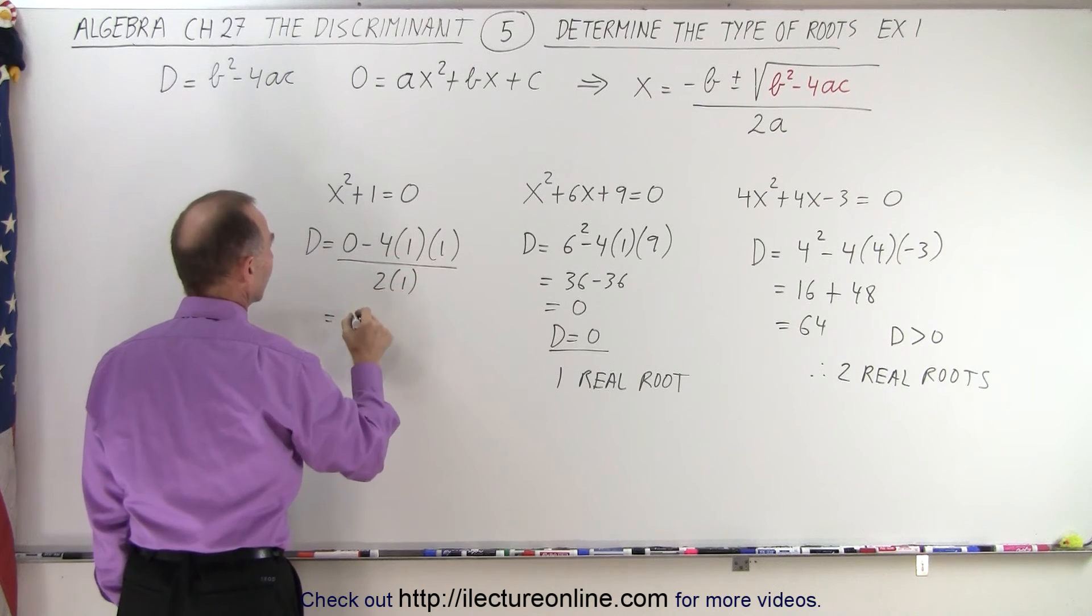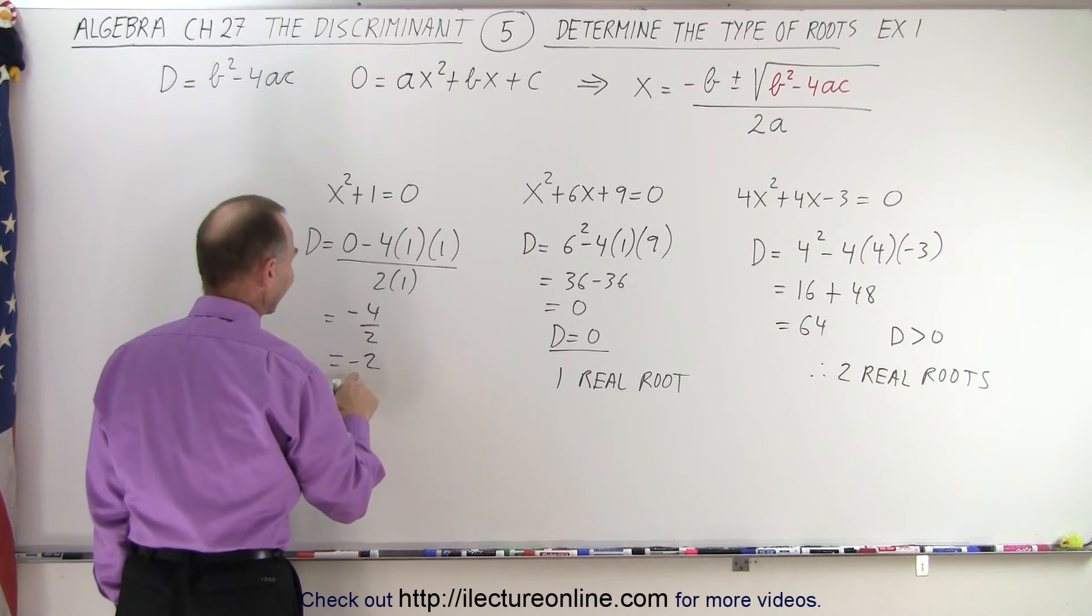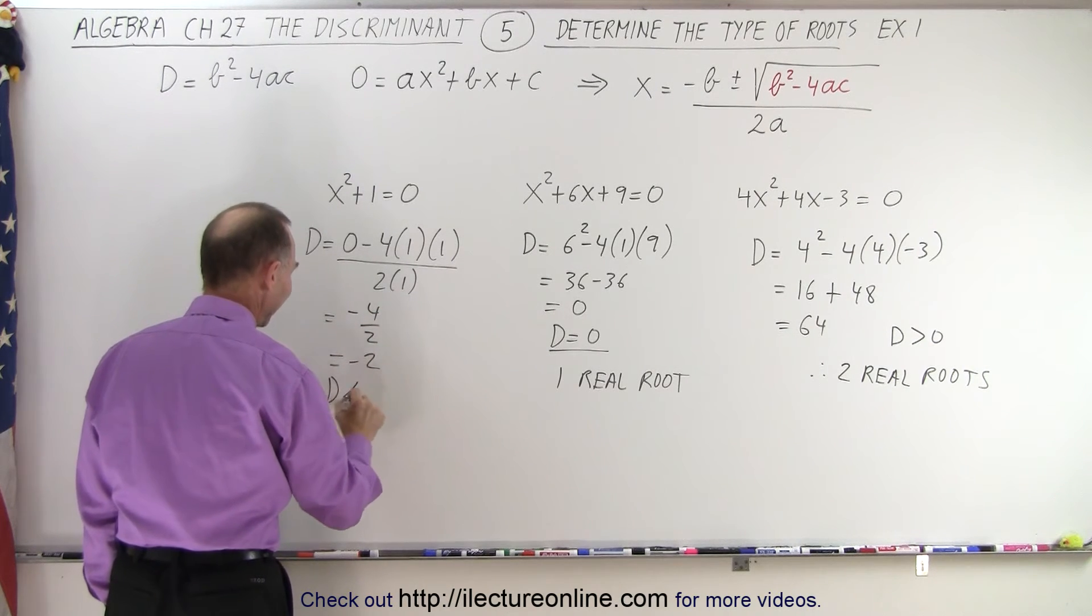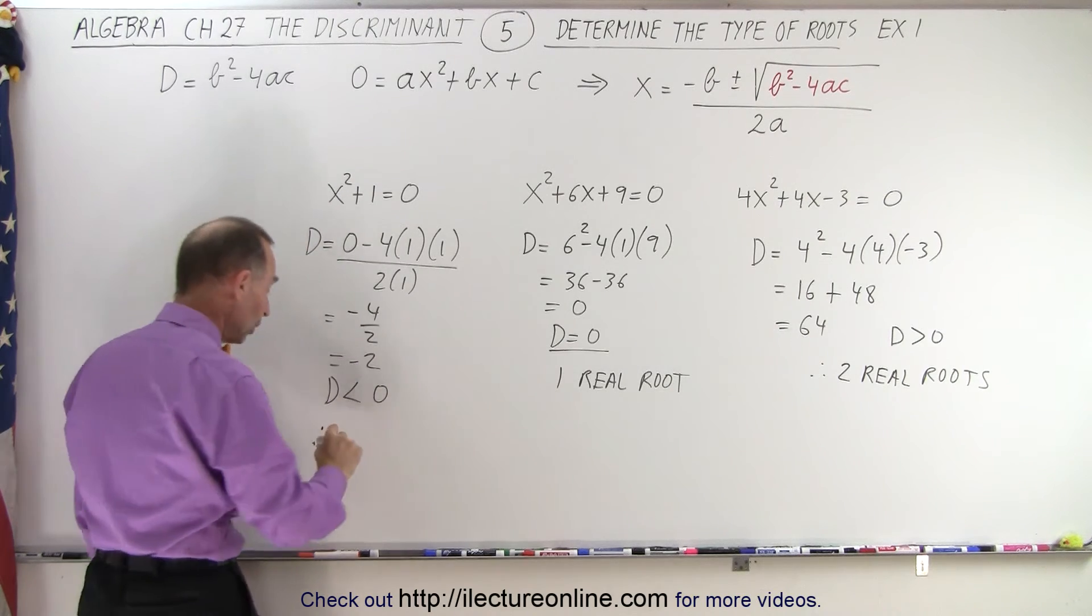So this is equal to negative 4 over 2, or negative 2. It's a negative number. D is less than 0, so therefore, there are no real roots.